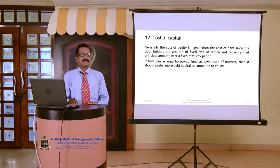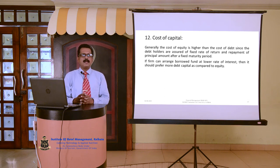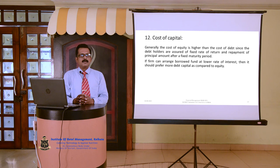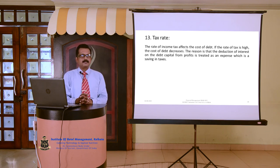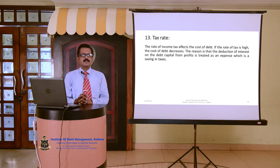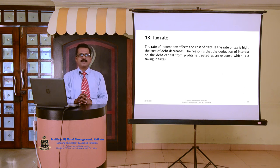Point number 12 is cost of capital. Generally, the cost of equity is higher than the cost of debt, since debt holders are assured of a fixed rate of return and repayment of the principal after a fixed maturity period. If a firm can arrange borrowed funds at a lower rate of interest, it will prefer more debt capital over equity. Point number 13 is tax rate. The rate of income tax affects the cost of debt. If the tax rate is high, the cost of debt decreases because deduction of interest on debt capital from profits is treated as an expense, resulting in a tax saving.